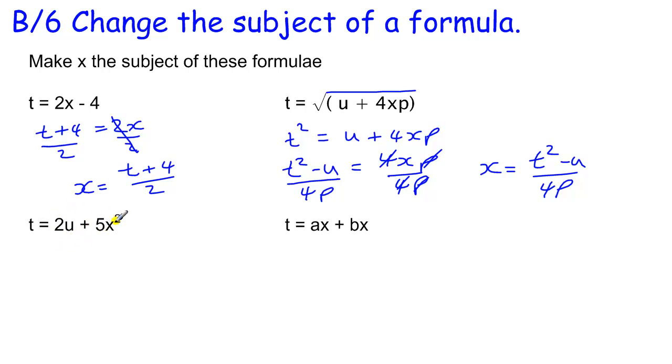Essentially what we do is move everything that's not around the x to the other side. So this 2u can go to the other side to become minus 2u. And then I've got 5x squared. And then anything I'm multiplying by, I divide by. So I've got t minus 2u over 5, and that's equal to x squared.